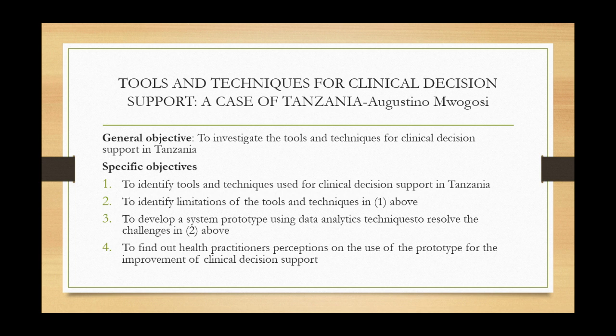This is very important to note. Among the guidelines mentioned in the last episode, one was that your objective should be presented briefly and concisely. The second was that they should be presented in logical sequence. As you can see, the first, second, third, and fourth objectives depend on each other. The first was to identify the tools; the second, after identifying the tools, was to find out the limitations; the third was to develop the system prototype to overcome the challenges; and then, after developing the prototype, he sent it to health practitioners to get their perceptions. So this kind of objective has followed the guidelines as we discussed in the last episode.